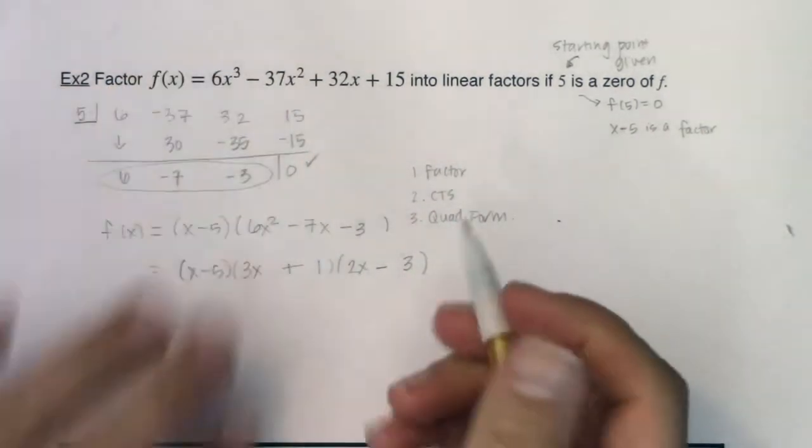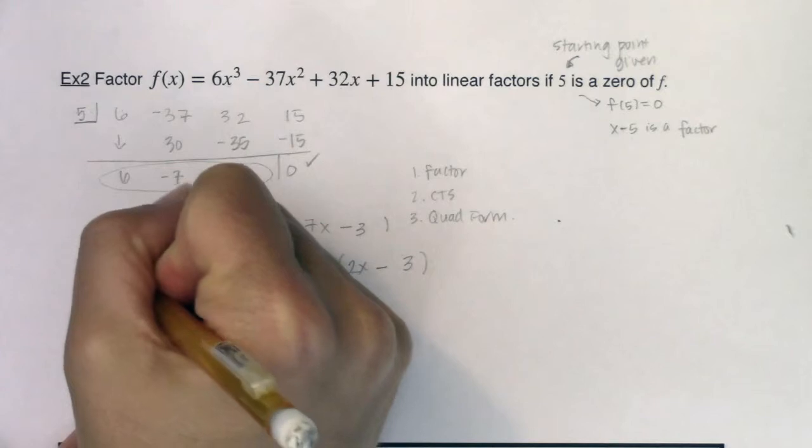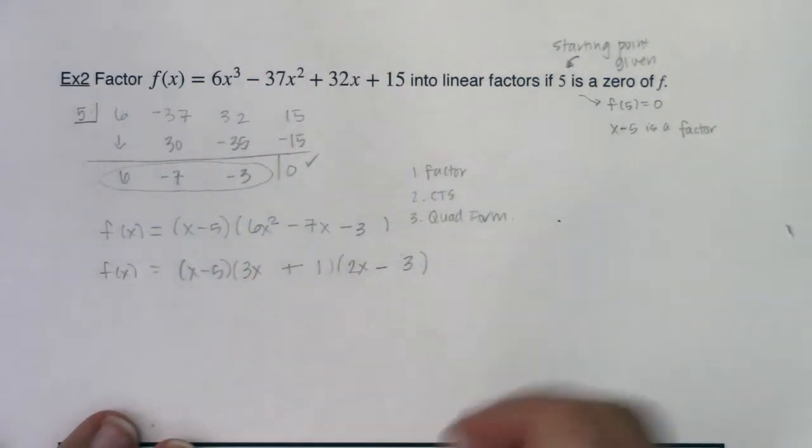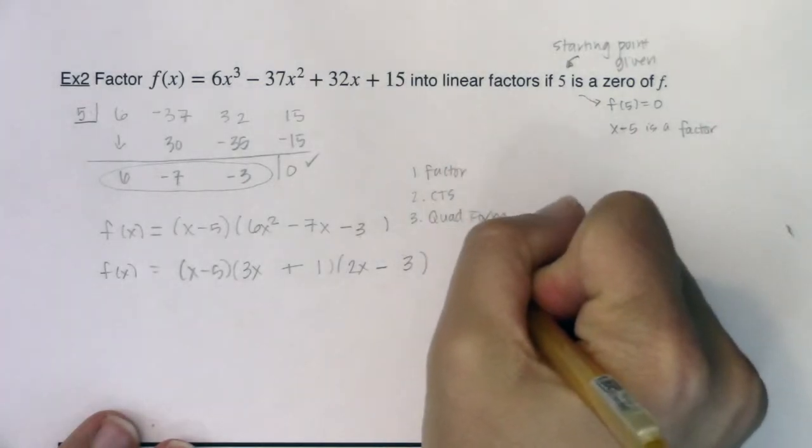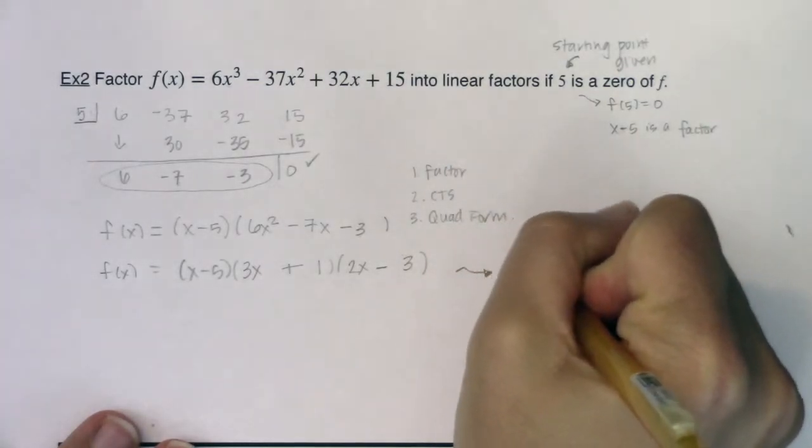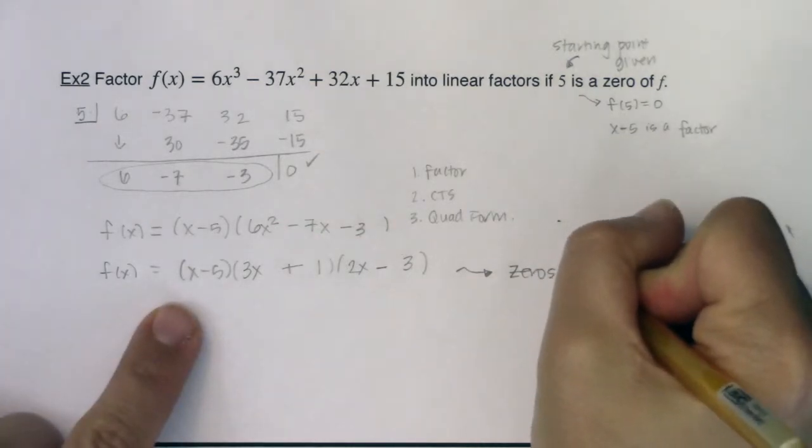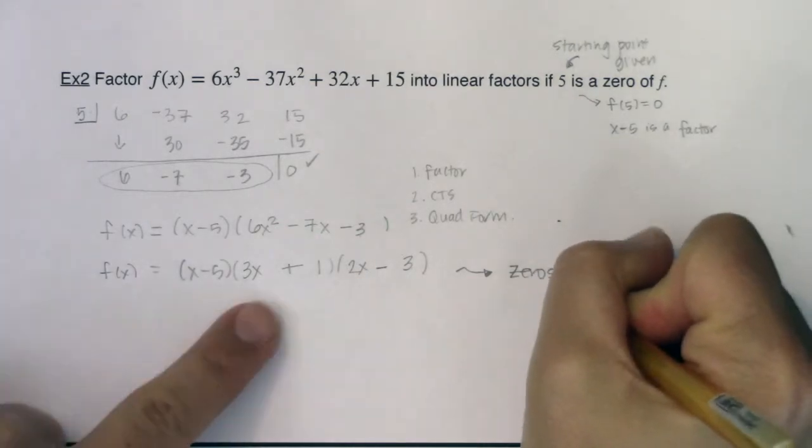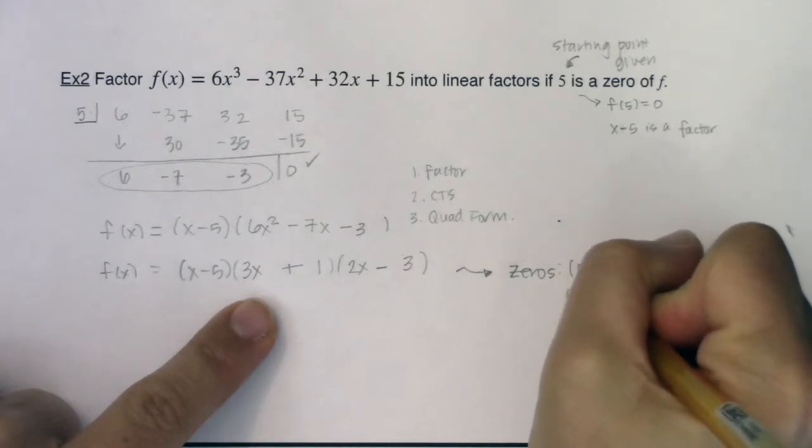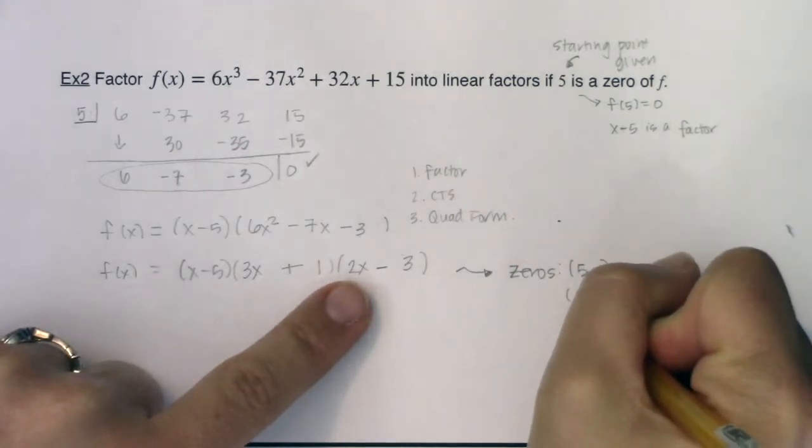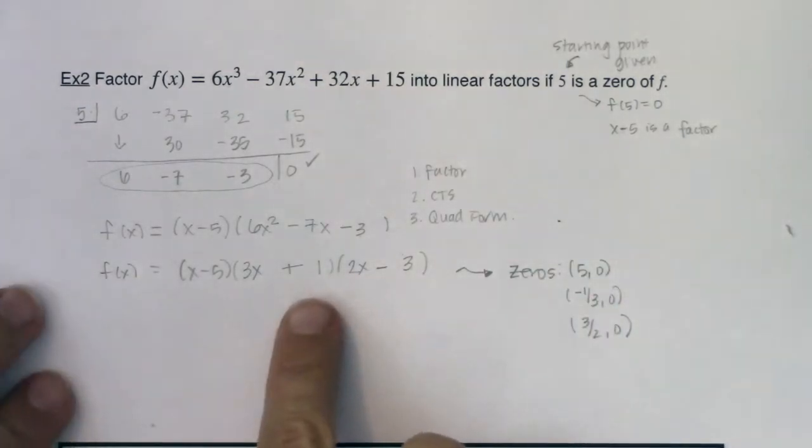So with that, I know f(x) is equal to (x - 5) times (3x + 1) times (2x - 3). So if I wanted to talk about the zeros, or the x-intercepts, I could see I had an x-intercept at (5, 0). If I solved this one, it would be (-1/3, 0), and this one would be (3/2, 0). And that would be from using the zero product property and sending each of these factors to 0.